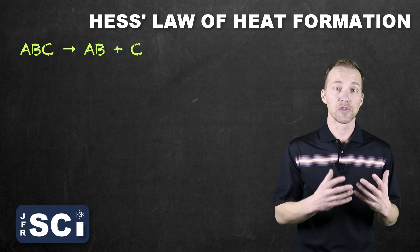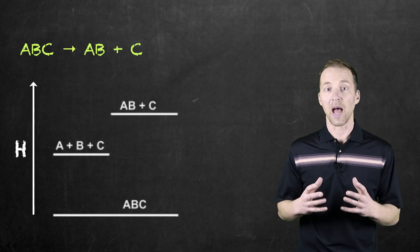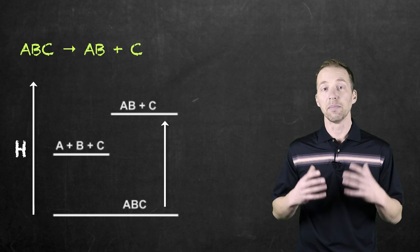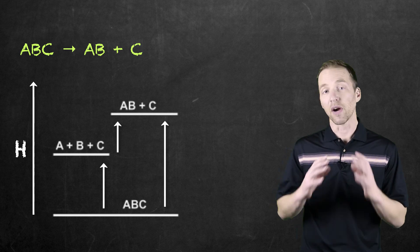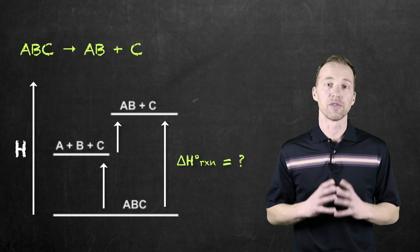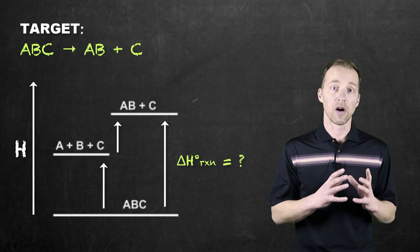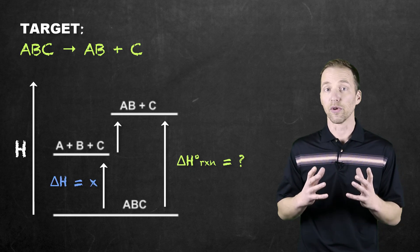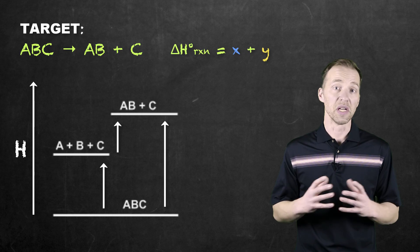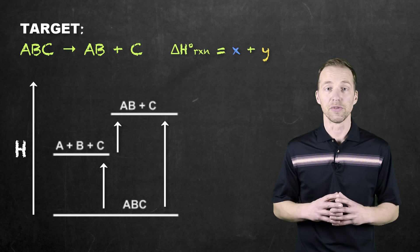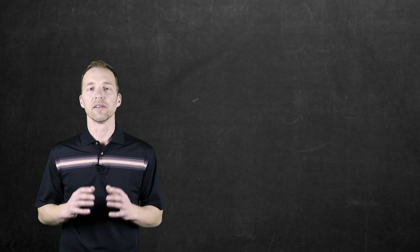If our reactants serve as the start of our pathway and our products serve as the end, there are possibly multiple ways to get from reactants to products. If our goal is to figure out the overall enthalpy change for a particular reaction, and we know the enthalpy changes for alternate pathways, we can use those to figure out the overall enthalpy change for our target pathway. This is known as Hess's Law.